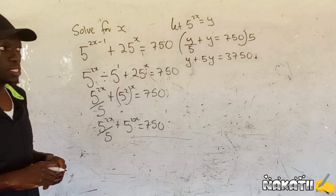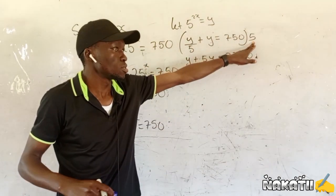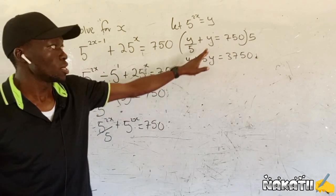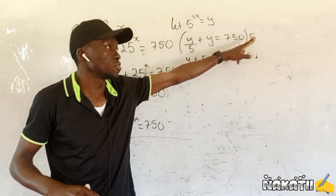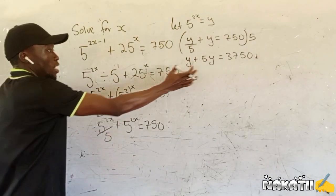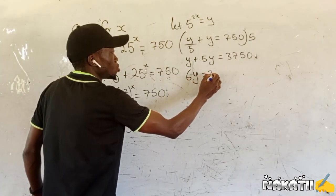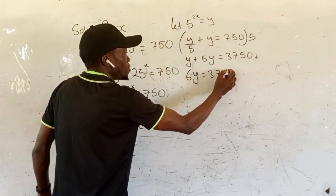When we multiply 750 times 5, you get 3750. So this y cancels with this, this 5 cancels with this 5. We're going to remain with y here. Y times 5 is 5y. You can add these two here such that you're going to have 6y equals 3750.